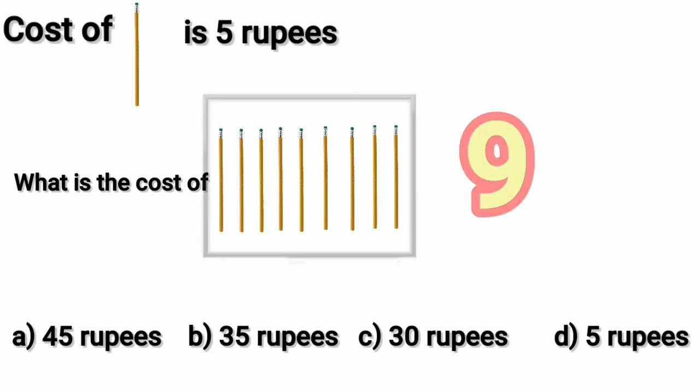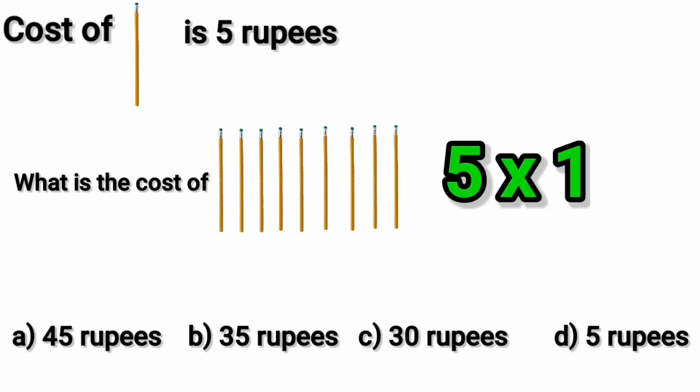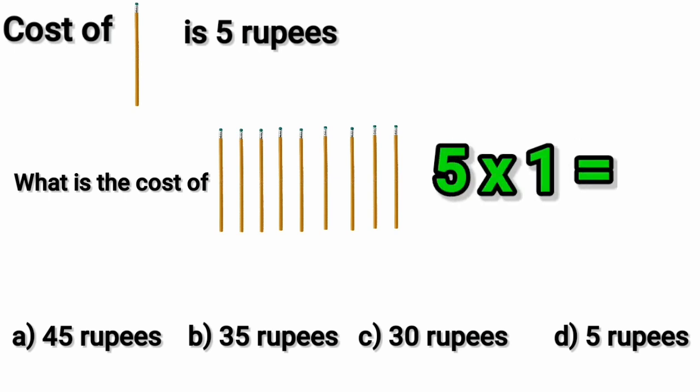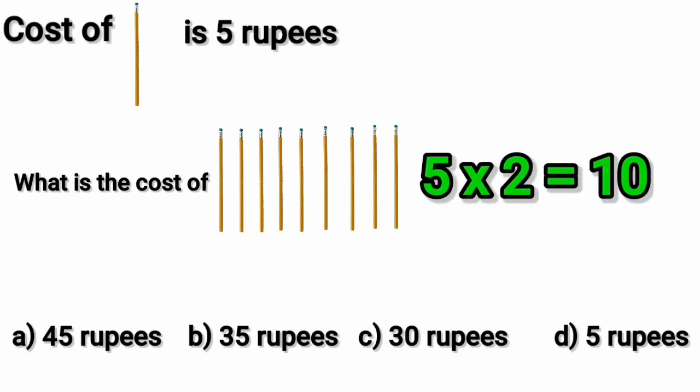What is the cost of one pencil? It is five rupees, so five into one is the cost of one pencil. Five ones are five. So let's first find the cost of two pencils. Five twos are ten. Cost of two pencils is ten rupees.